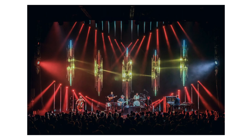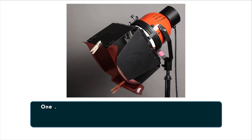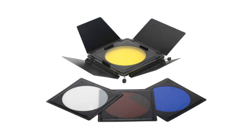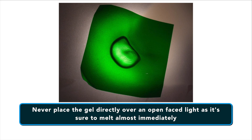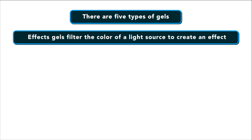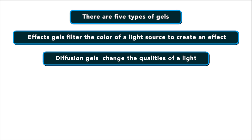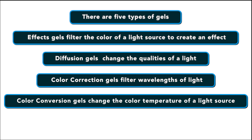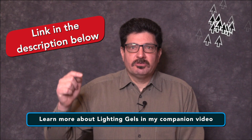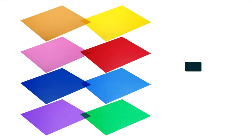Now that you understand how light and gels can affect your scene, let's talk about attaching them to your lights. One of the most common ways to attach gels is to use classic wooden clothespins, sometimes known as C47s, and clip the sheet to the barn doors of your light. Other types of lights may have attachable frames to hold the gel. Just remember, never place the gel directly over an open face light as it's sure to melt almost immediately. There are five types of gels: effects gels filter the color of a light source to create an effect; diffusion changes the qualities of a light; color correction gels filter wavelengths of light; color conversion gels change the color temperature; and neutral density gels reduce the intensity of a light source.